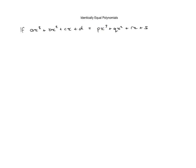So from this we can ascertain that a must be equal to p. Likewise, for the x squares on the left hand side we have b, and on the right hand side we have qx². So b must be equal to q. Again, if we go after the x's we can see that c is equal to r and d is equal to s.